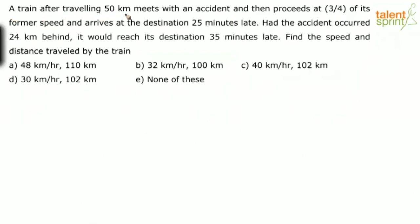A train after traveling 50 kilometers meets with an accident and then proceeds at three-fourths of its former speed, arriving at the destination 25 minutes late. Had the accident occurred 24 kilometers behind, it would have reached its destination 35 minutes late. Find the speed and distance traveled by the train.